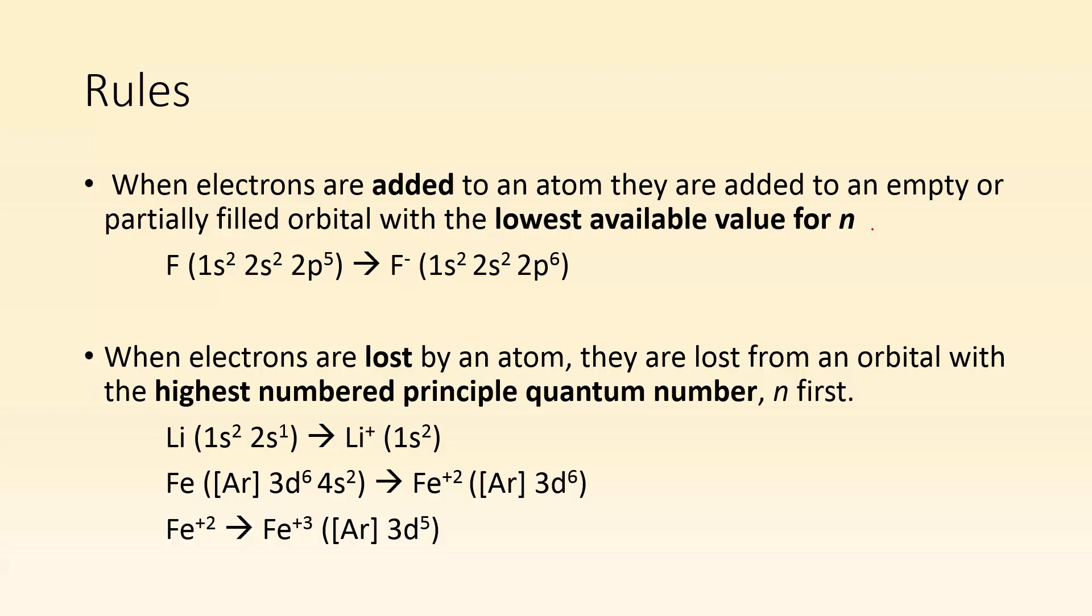So rules. Here are the rules. When electrons are added to an atom, they're added to an empty or partially filled orbital with the lowest available value for n. So basically, they go into the lowest principal energy level.